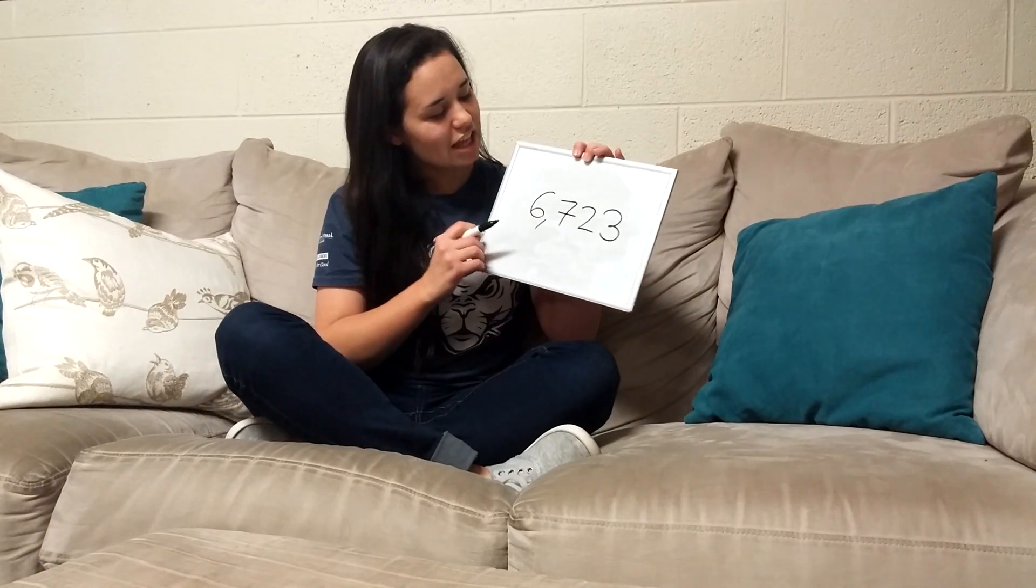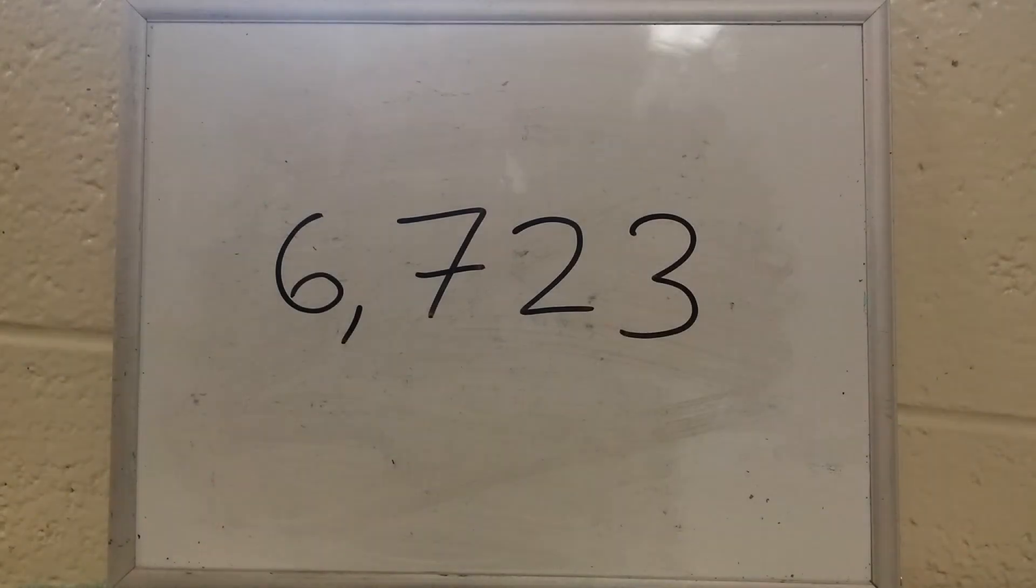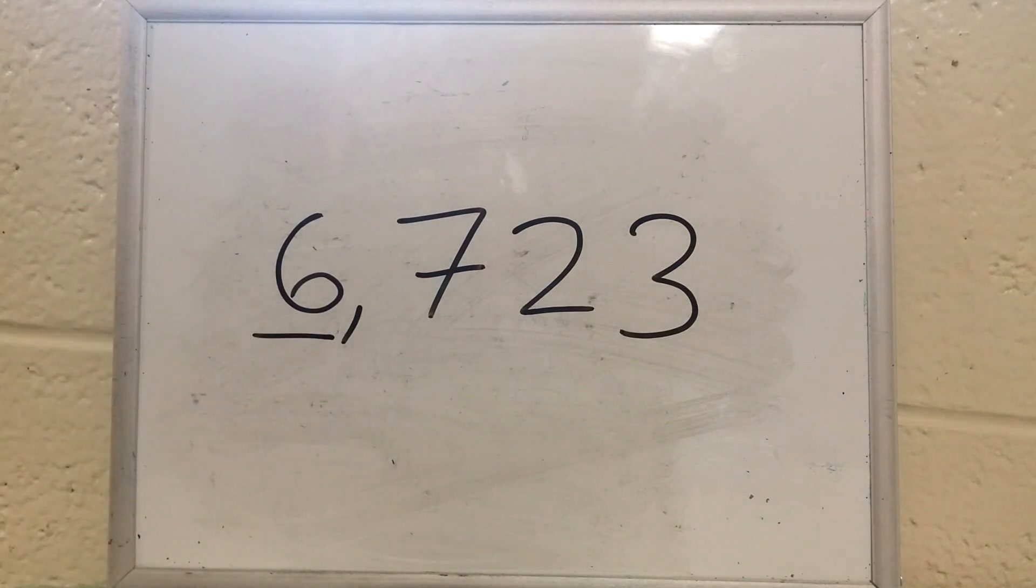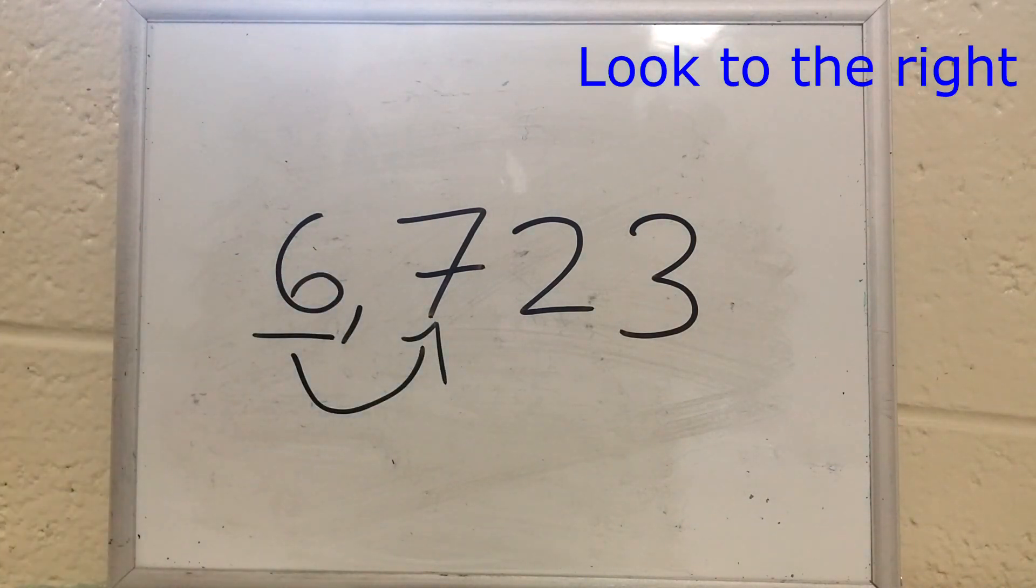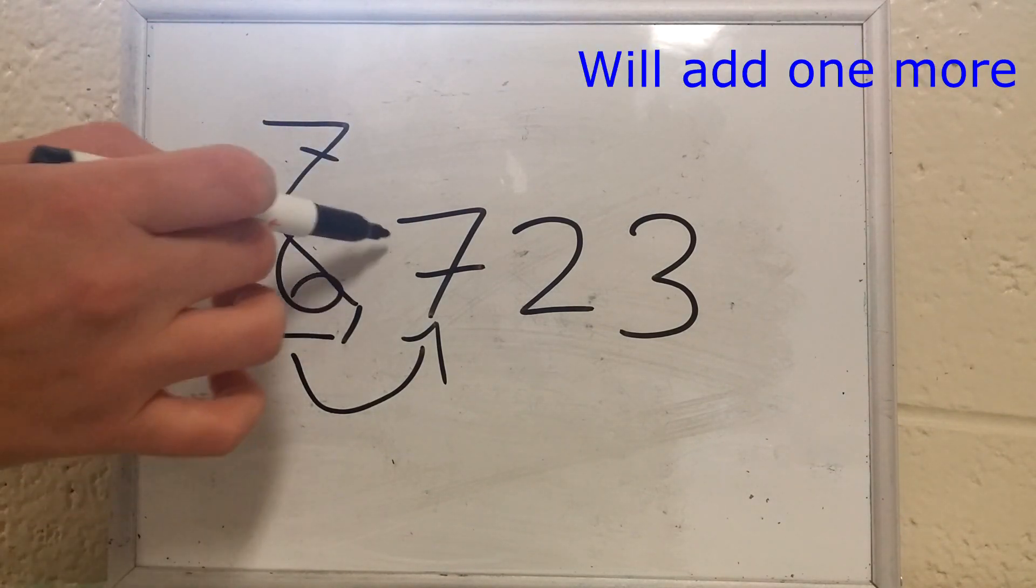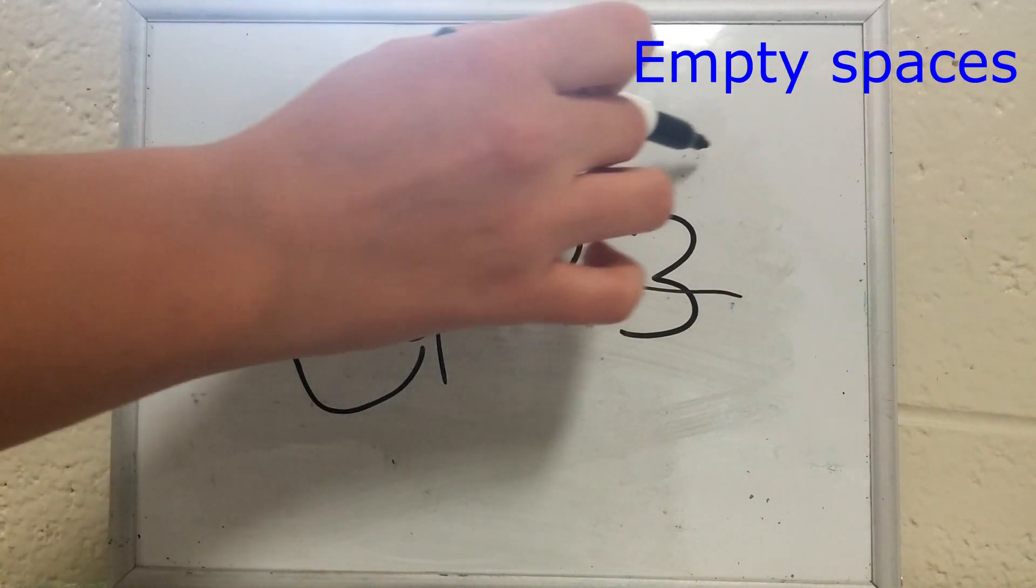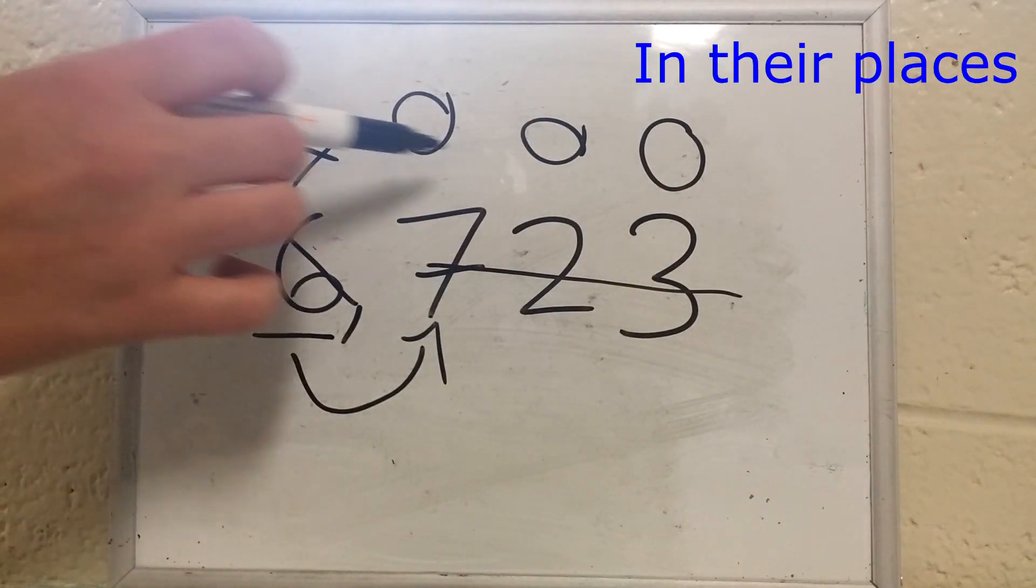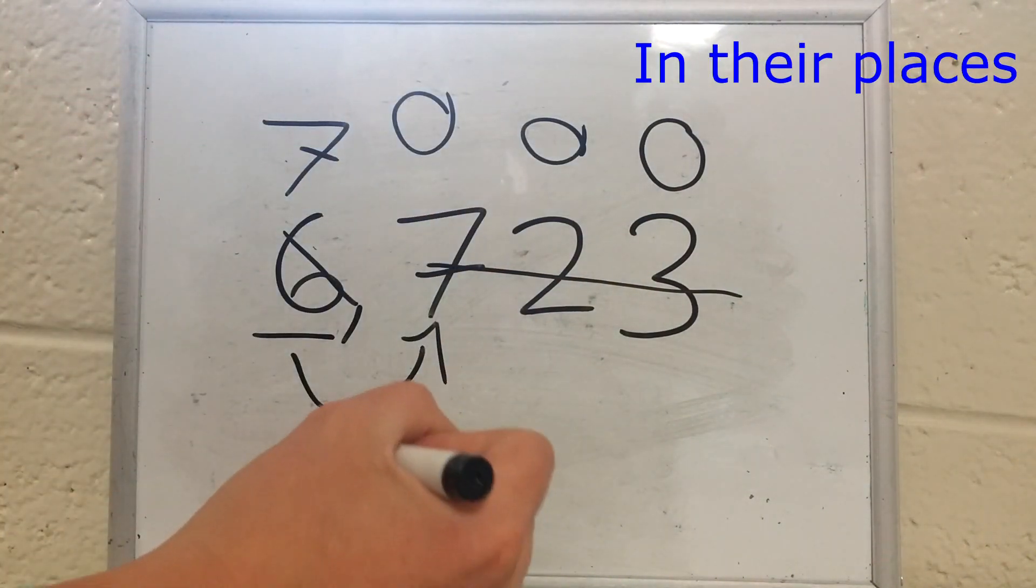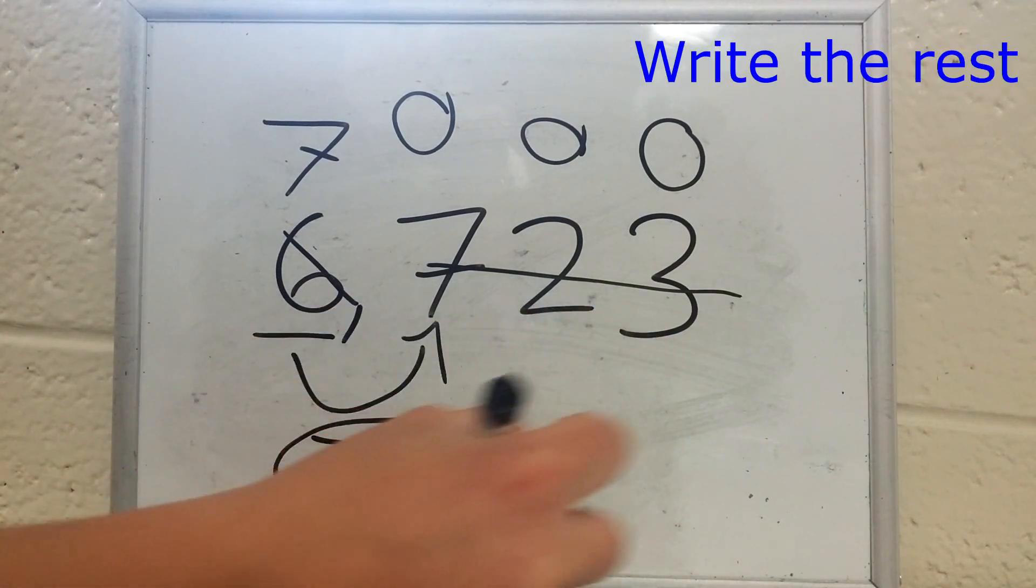Now that we've gone through all the steps, let's do it a little faster all together. This time we're going to round the number 6,723 to the thousands place. Here we go. Mark your spot, look to the right. Four or less is out of sight. Five or more, we'll add one more. Before the rest go out the door. Fill up all those empty spaces, put some zeros in their places. This song will help you pass the test. Now you go out and write the rest.